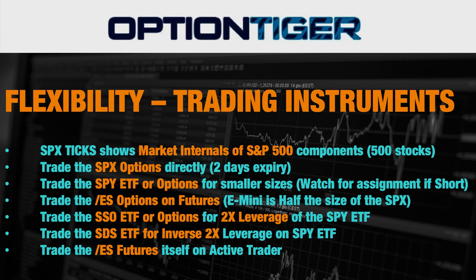If the SPX options are a bit big in size, you can trade the SPDR. The SPDR is an ETF of the S&P 500 and it's one-tenth the size of the SPX index itself. You can trade the SPDR options or the SPDR ETF itself — if you're a stock trader, you can trade it just like any other stock. If you get into a short position on SPDR options, you have to watch for assignment because the SPDR can be assigned if the short ends up in the money.